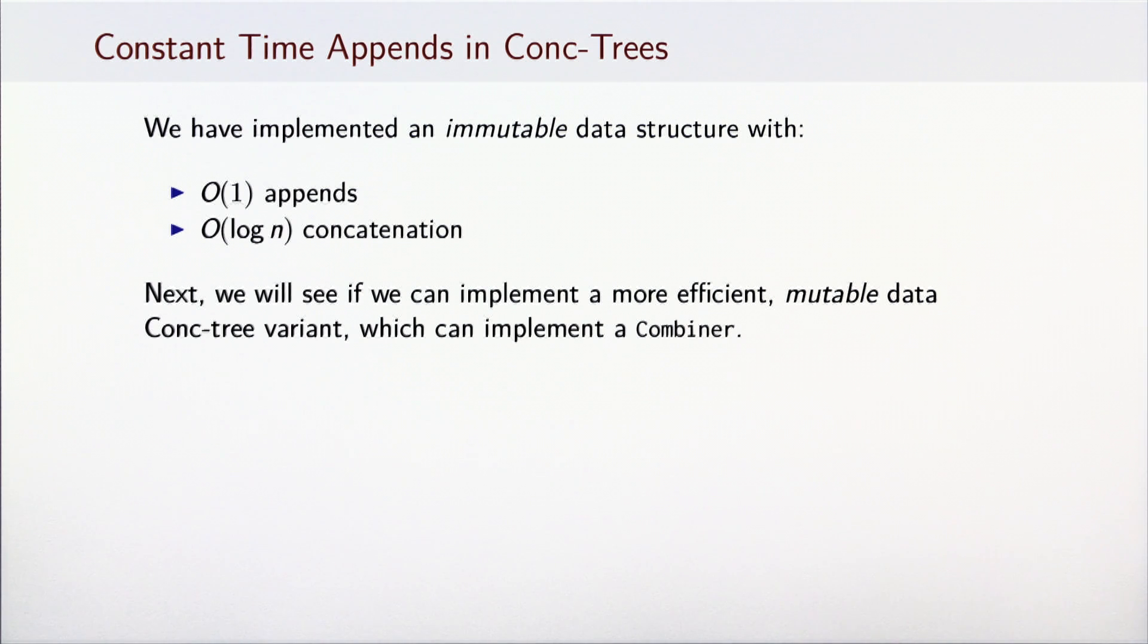To summarize, we have implemented an immutable data structure with amortized constant-time append operation and logarithmic-time concatenation. Although we did not show how to transform a conc-tree with Append nodes into a regular conc-tree in logarithmic time, we note that this should be straightforward to do. This requires concatenating the trees from the append list together. We leave this task to you as an optional exercise. In the next lecture, we will use the O(1) append operation as a basis for an efficient mutable data structure used to implement a combiner. Thank you.